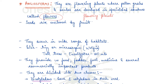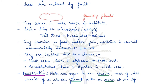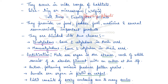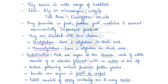In angiosperms, the seeds are enclosed by fruits, and angiosperm plants are considered an exceptionally large group that occur in a wide range of habitats. They can be very tiny or microscopic, as in the case of Wolffia, or very tall like the eucalyptus tree which is around 100 meters in height. They provide us with food, fodder, fuel, medicine, and several commercially important products.